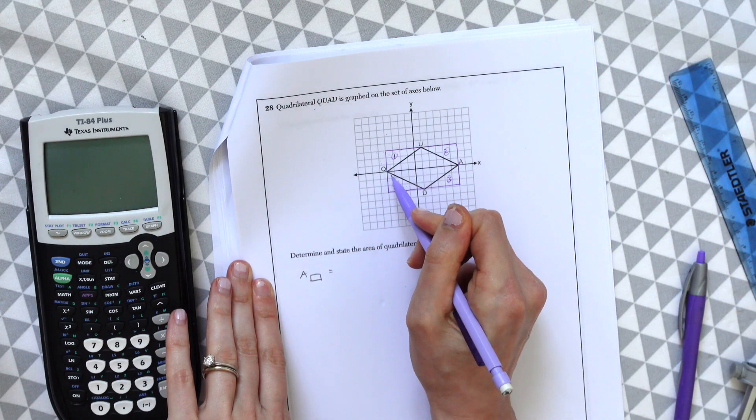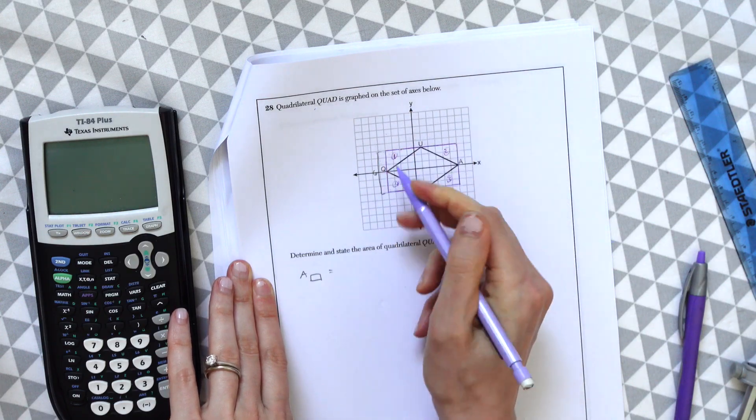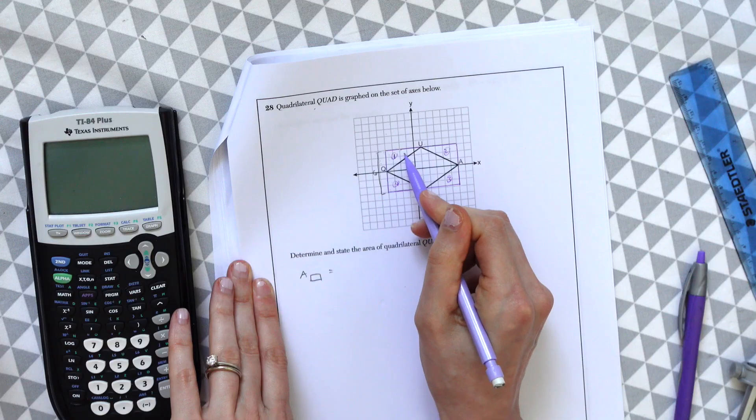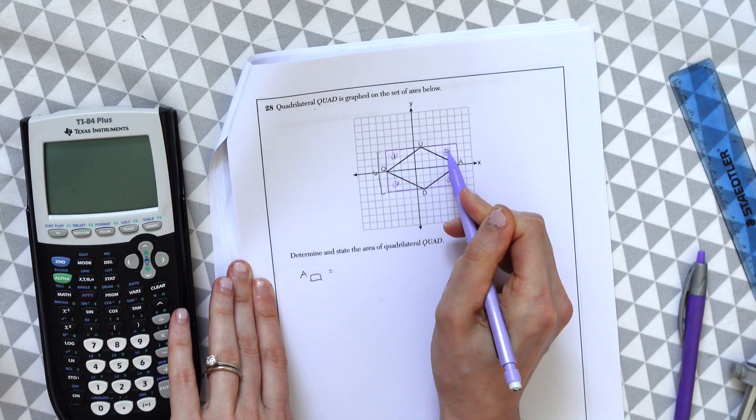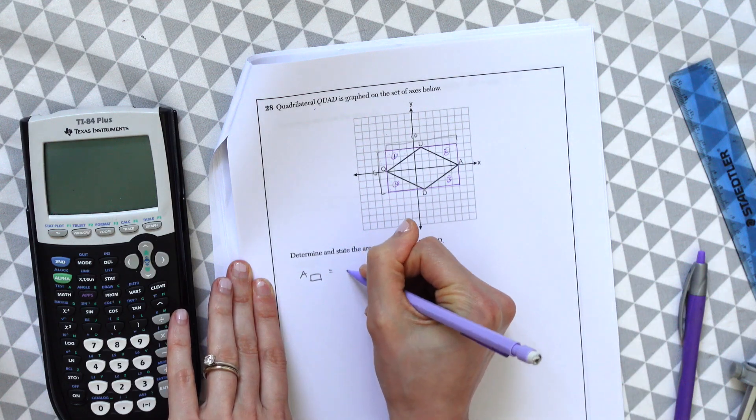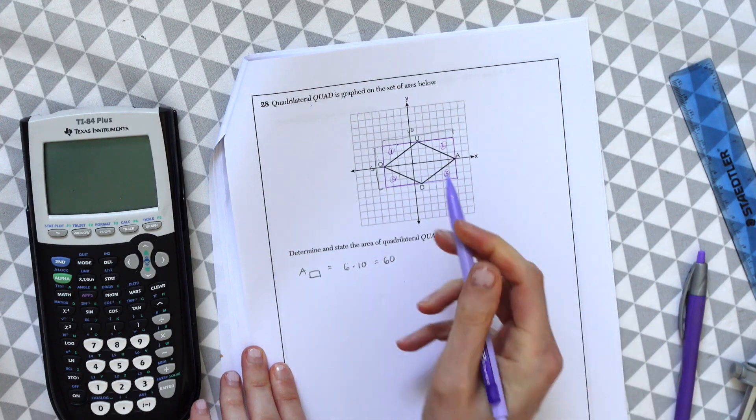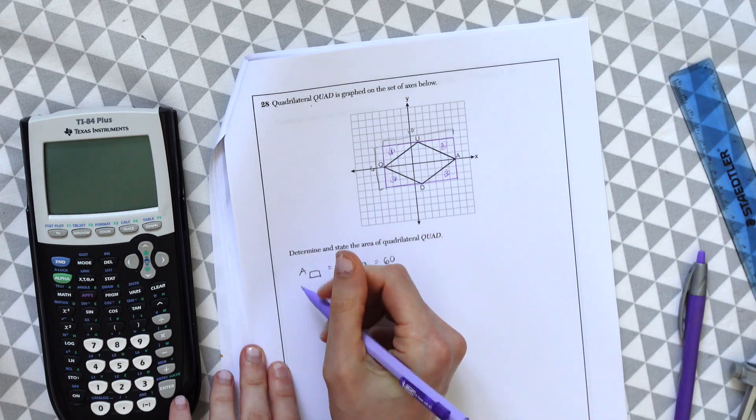So first, let's find the area of that big rectangle that we just made. So this has one, two, three, four, five, six. This has six going all around this way. And one, two, three, four, five, six, seven, eight, nine, ten, ten units going this way. So to get the area of a rectangle, we're just going to do six times ten, which gives us 60.